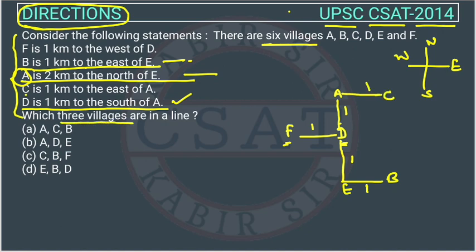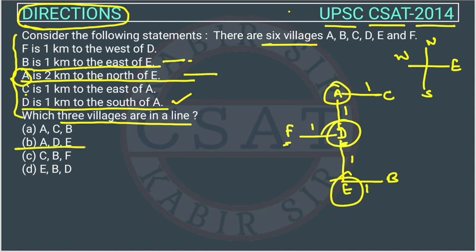Which three villages are in a straight line? This is very easy if you can draw the diagram. Looking at the plot, we can see that A, B, and E are in a straight line. So the answer is Option B — that is the correct answer. I hope you all got this; if not, you can contact us and I will explain it personally.